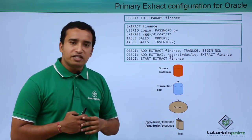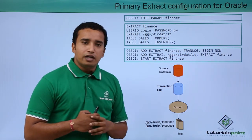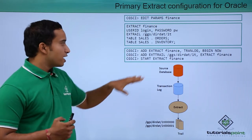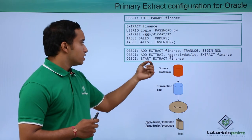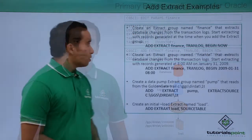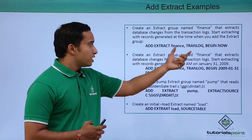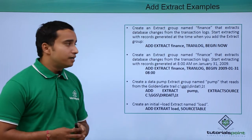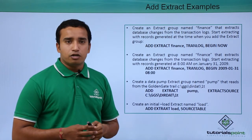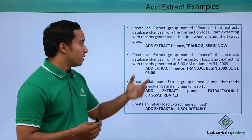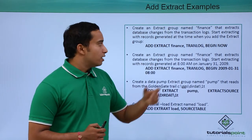Whatever trail file location you mentioned in the parameter file, you need to specify the same location here along with the extract name when registering using 'add exttrail'. Once you have registered the extract and the trail files, you are ready to start the extract process using: 'start extract <extract_name>'. When you register and start the extract, it will immediately begin capturing data from the redo log files.